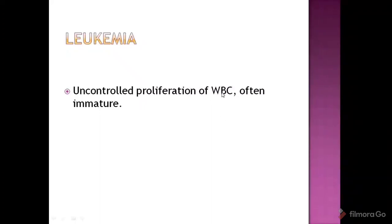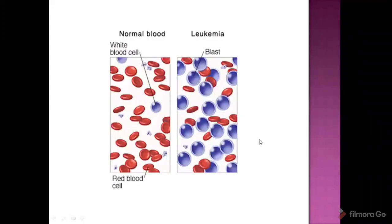In this case, immature WBC undergoes uncontrolled growth in the blood — that is leukemia. On the left side there is normal blood, and on the right side is leukemia blood. In normal blood, there are red blood cells and white blood cells in a normal ratio. In leukemia, the WBCs are immature and there is an uncontrolled proliferation in the blood.